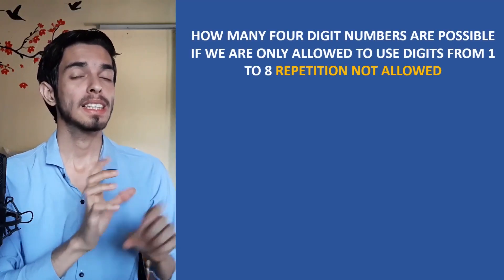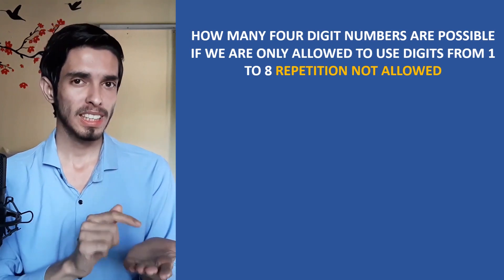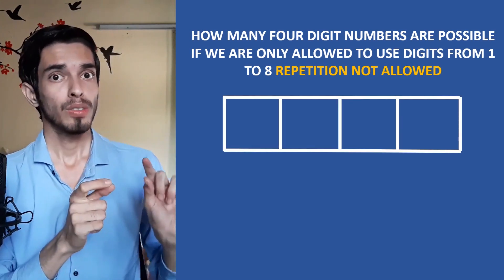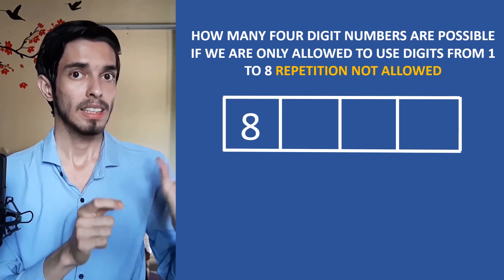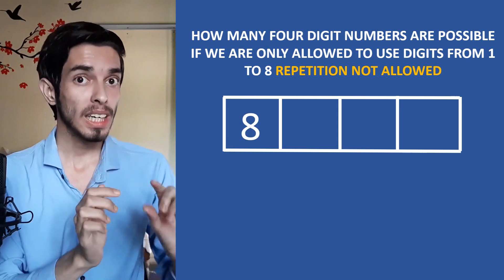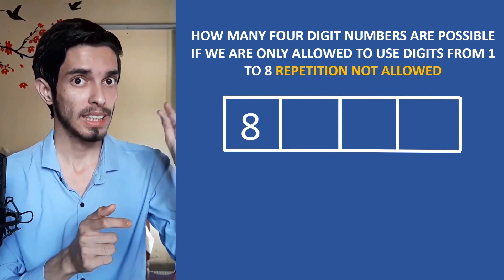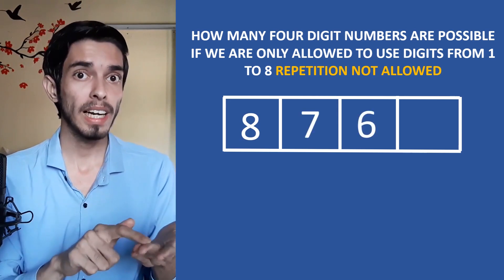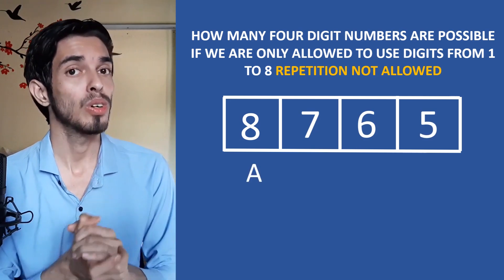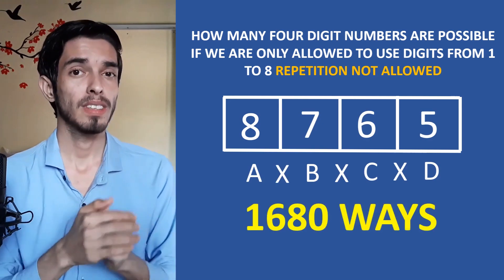Now what happens if the question says repetition of digits is not allowed? The number of ways to choose the first digit is still eight. But since we've used one digit and can't reuse it, the second digit has seven choices, then six, then five. Using the rule of products, the answer is eight × seven × six × five.